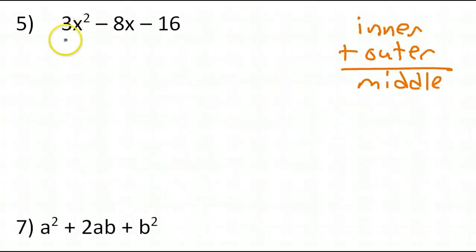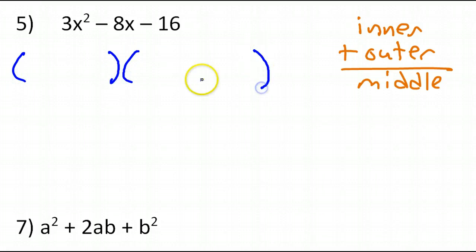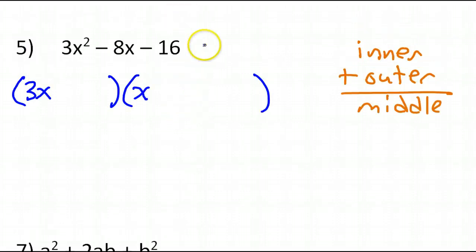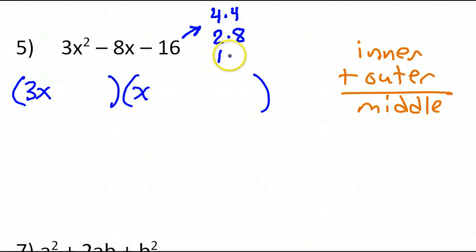When there's a coefficient that is not 1, I can't just immediately look at these pairs and look for the 8. Some kids are going to say, 'Oh, it's got to be 4 times 4 because that gives 8.' But because of the 3, this is probably not the answer. Nevertheless, let's try it first — starting with 4 and 4.